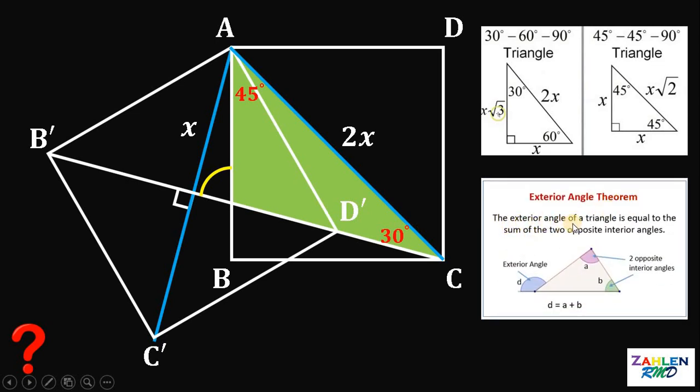The exterior angle of each triangle is equal to the sum of the two opposite interior angles. Therefore, this angle right here must be equivalent to the sum of these two acute angles, 45 degrees and 30 degrees. And 45 degrees plus 30 degrees will give us 75 degrees.